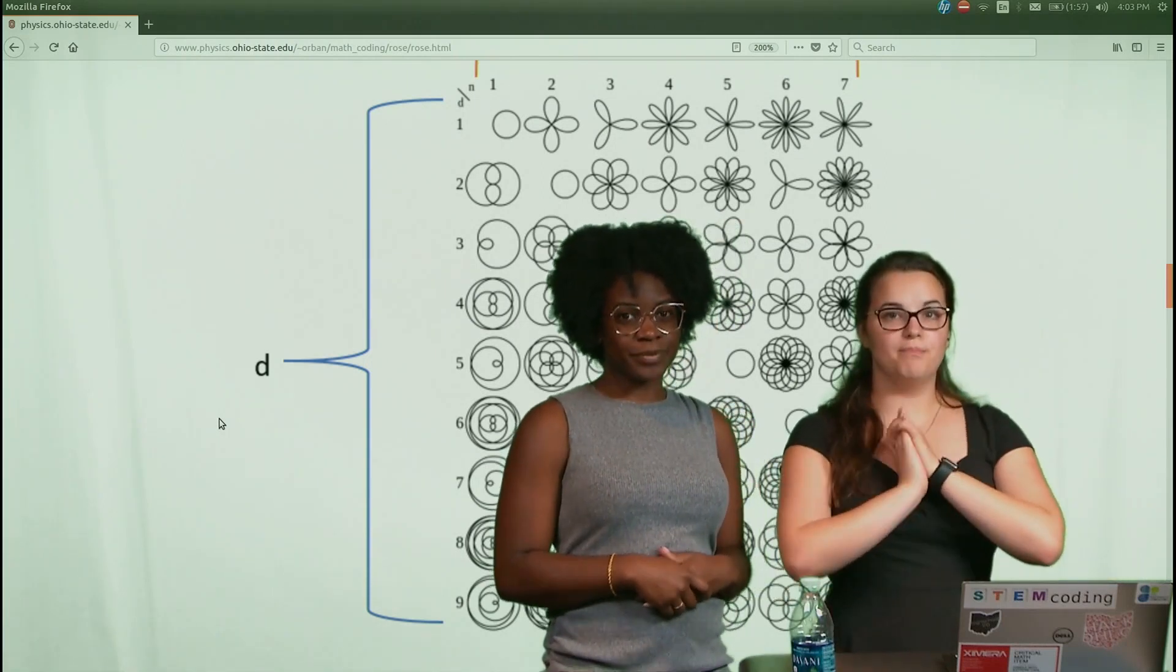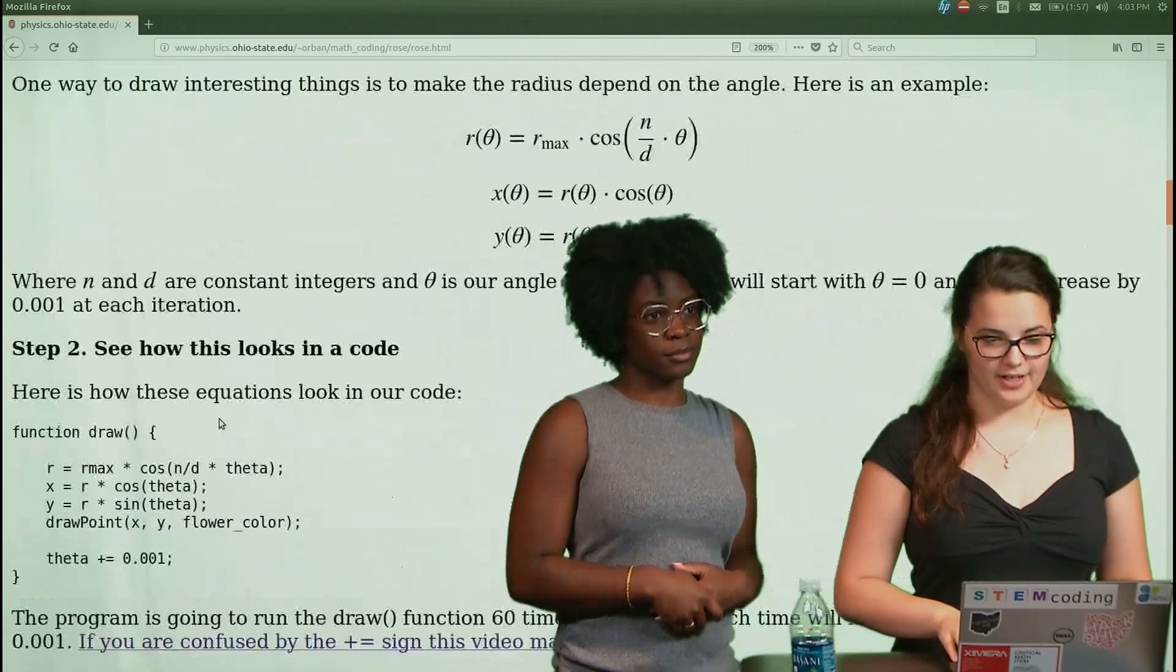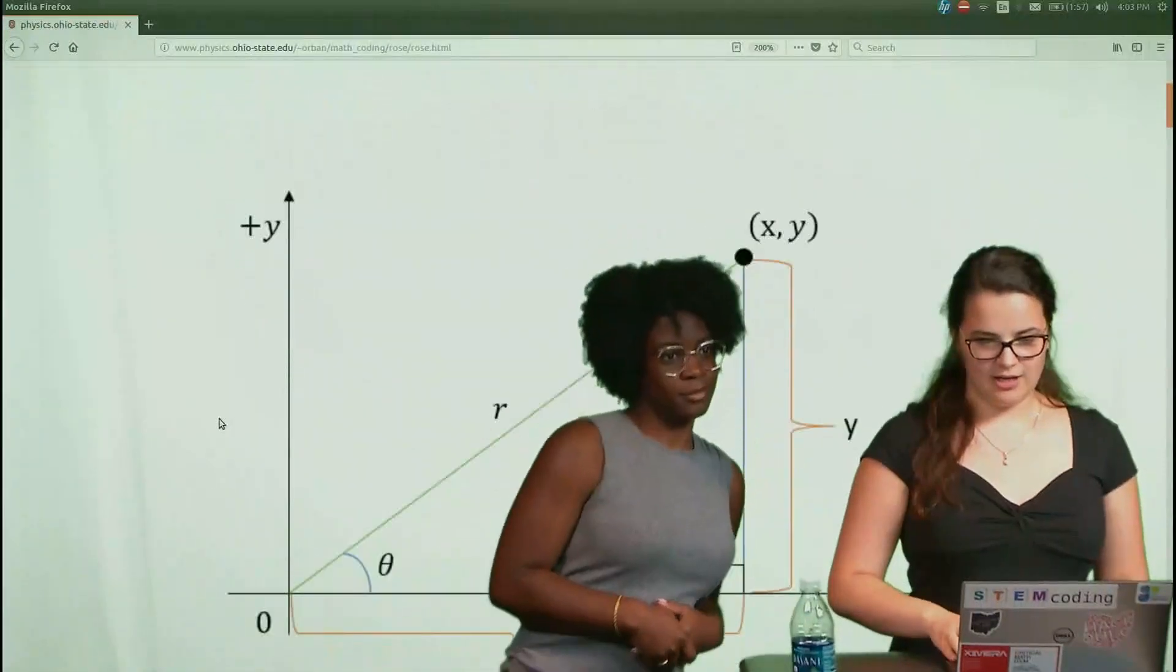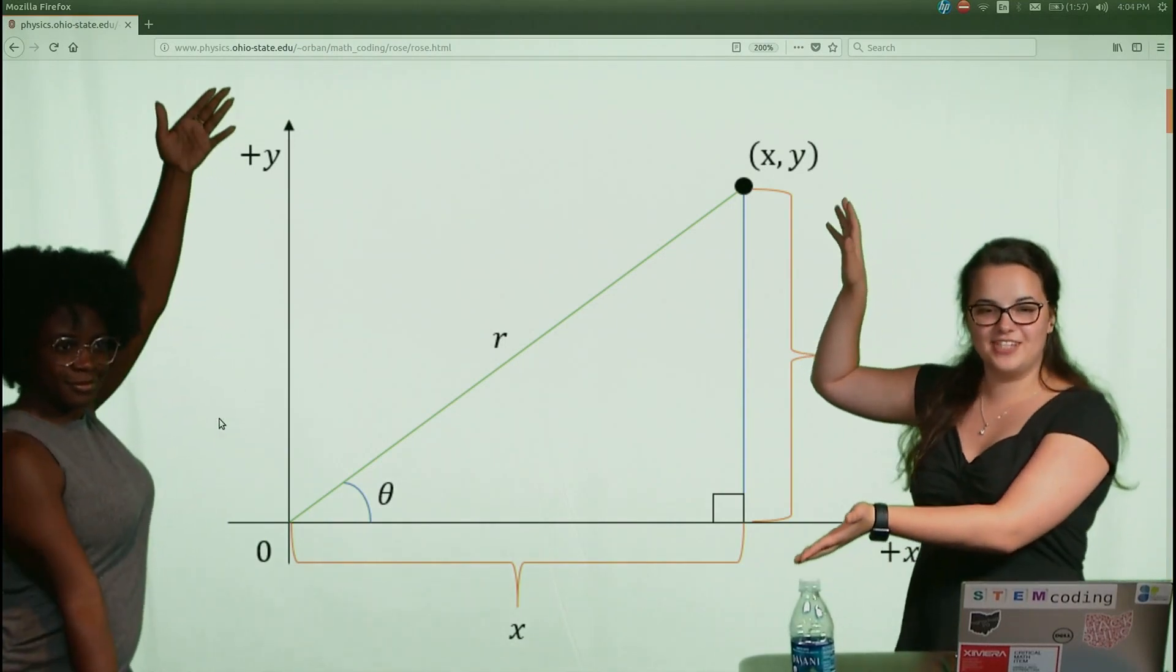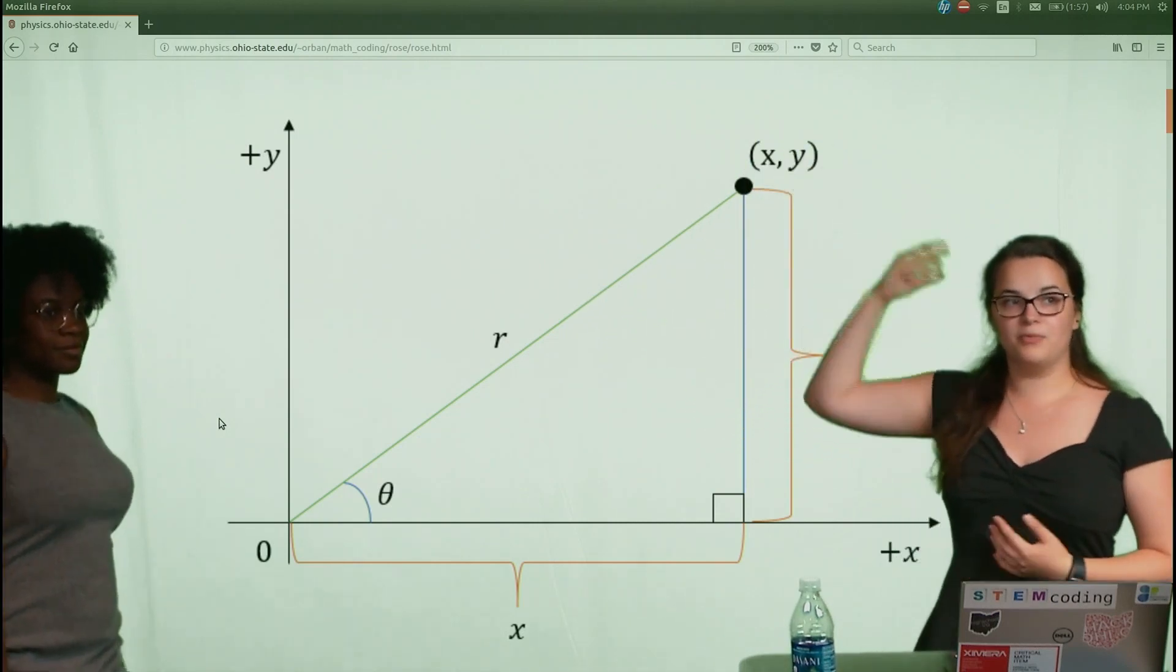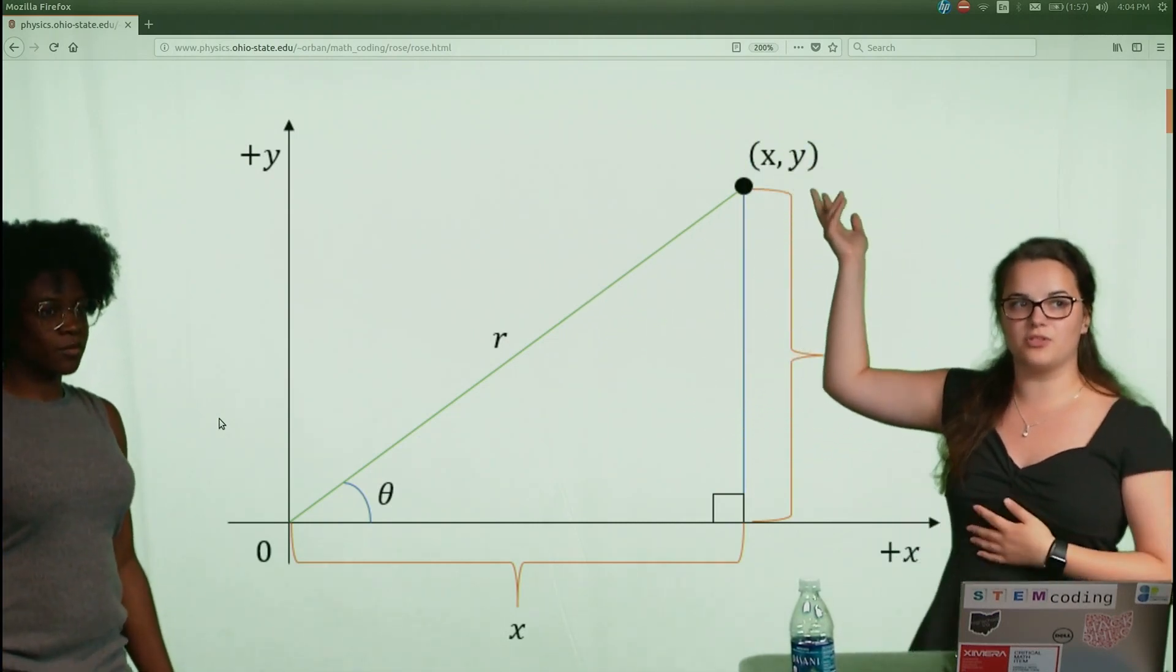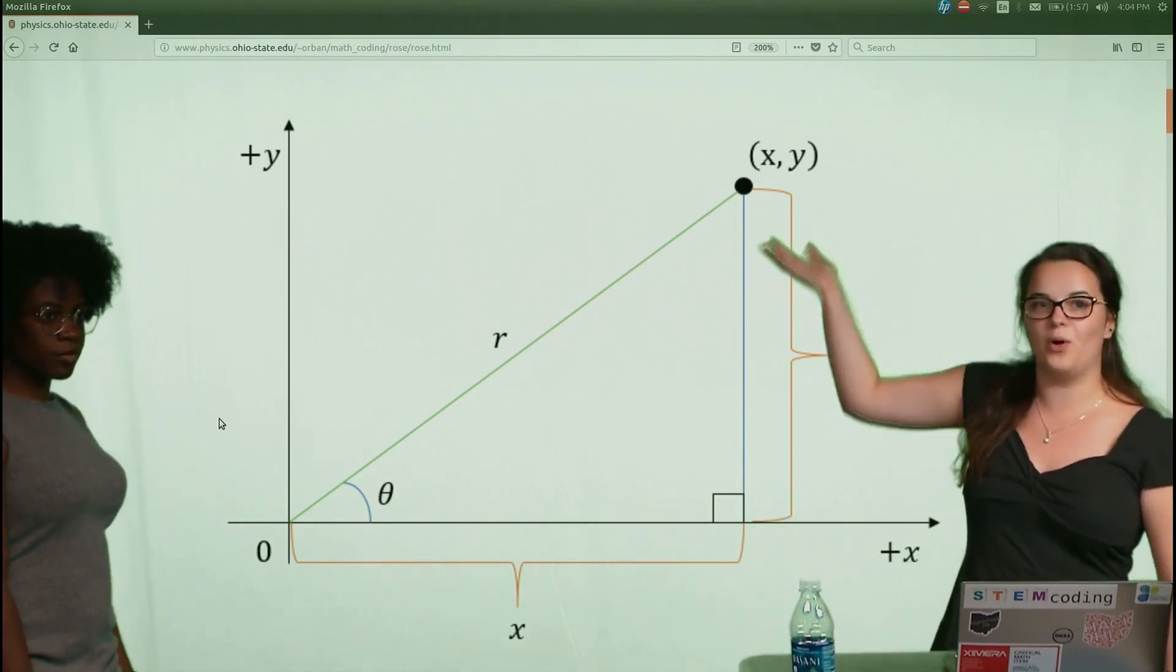To start out, we're gonna look at polar coordinates and get a better understanding of what those are. So if you look at this beautiful graph, we see an X and Y coordinate. This is what we mostly are familiar with. When we describe a point, we describe it in terms of X and Y positions. So how far it is along the X axis and Y axis.